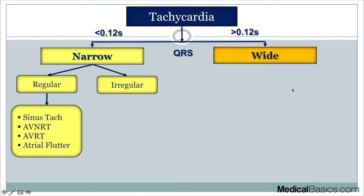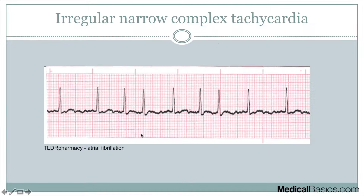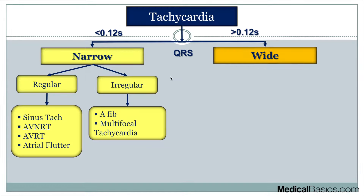The next category is irregular narrow complex tachycardia. Most commonly this is going to be AFib, which is the one you'll commonly recognize, but also multifocal tachycardia. In this AFib example, our QRS is going to be narrow, and it's also going to be an irregular waveform.